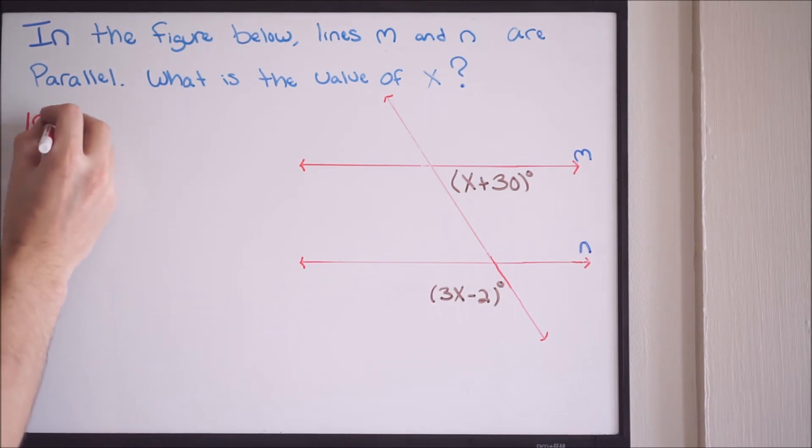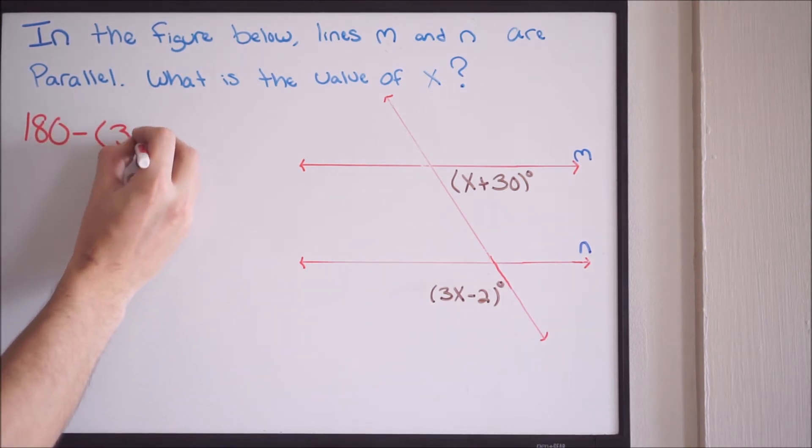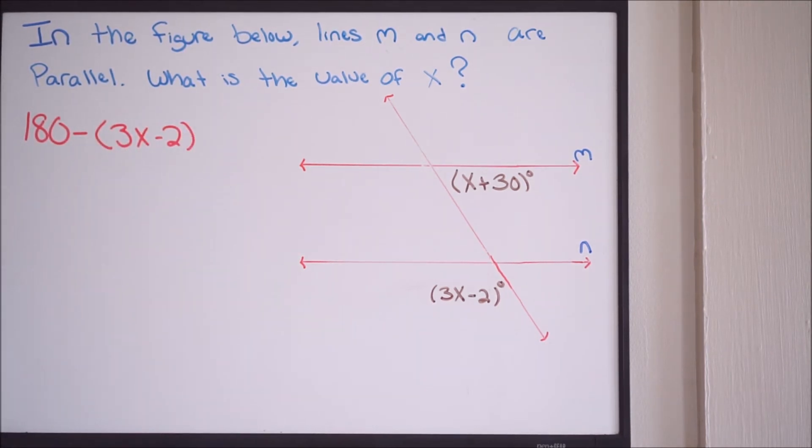if I have 180 minus, this whole angle here, which is 3x minus 2. So we're going to put that in parentheses, 3x minus 2. We want to determine what that's going to be. So let's go ahead and do that.